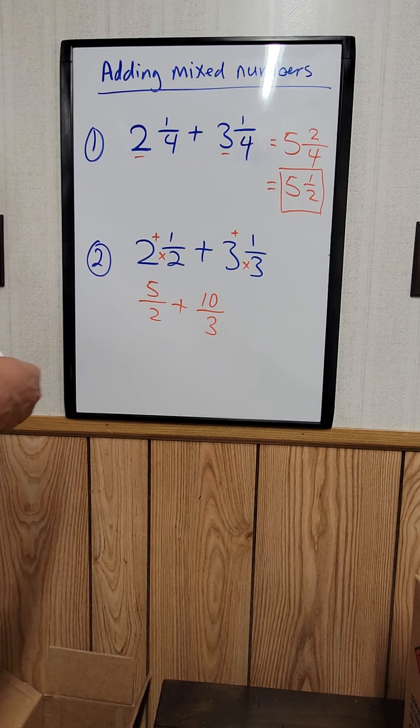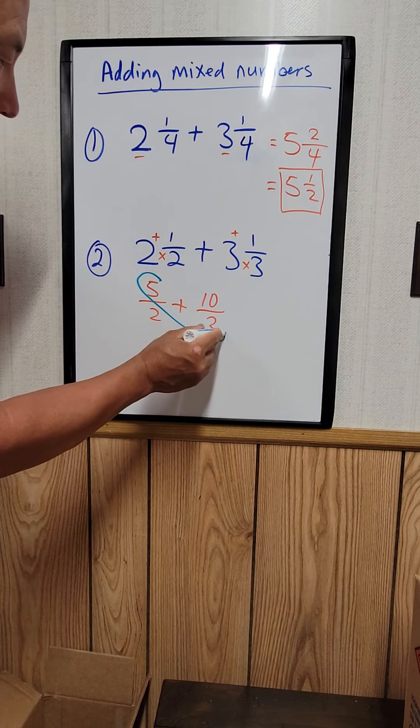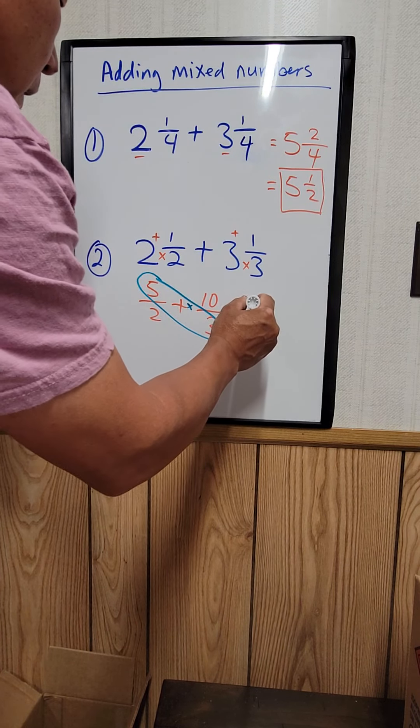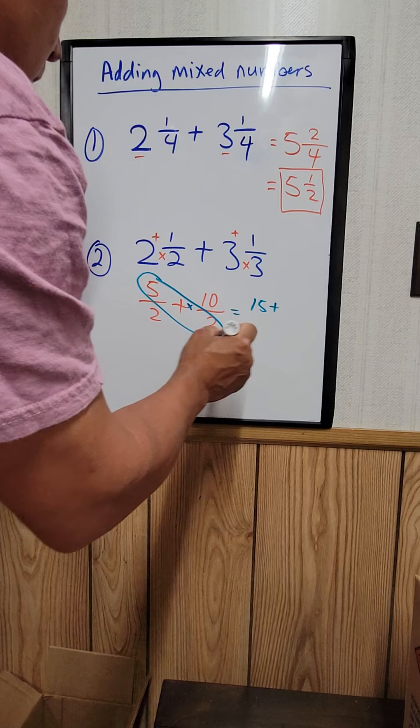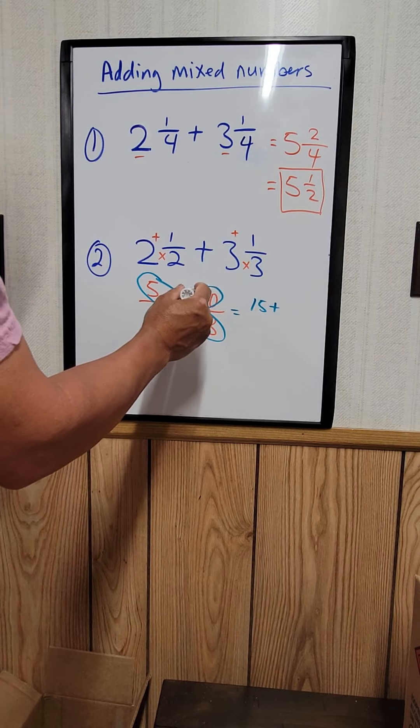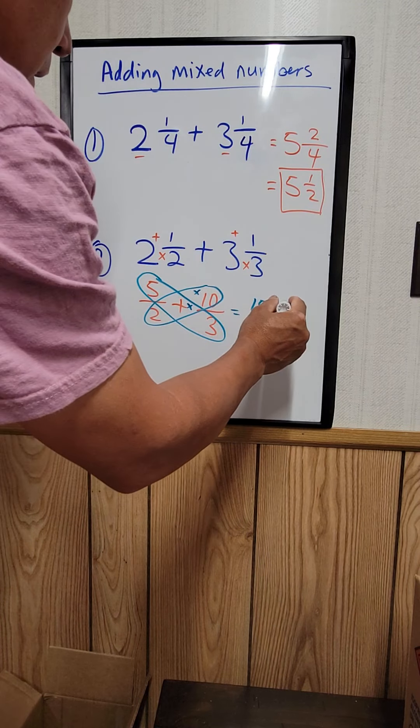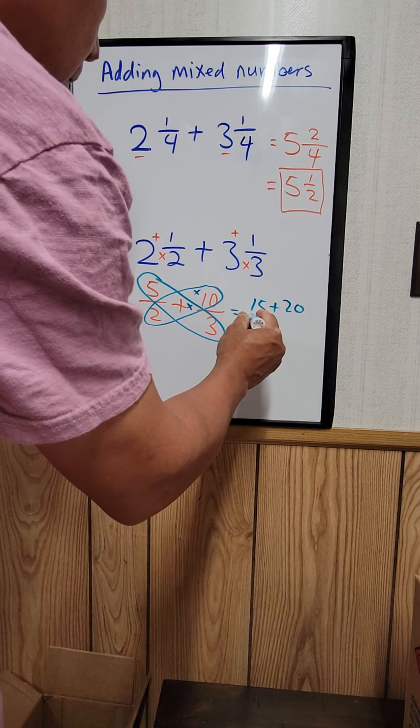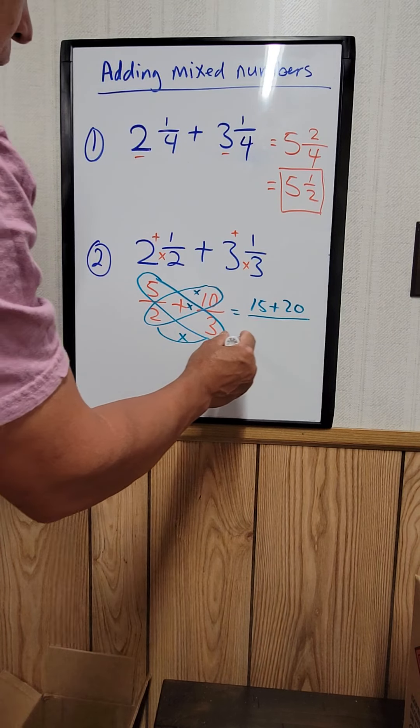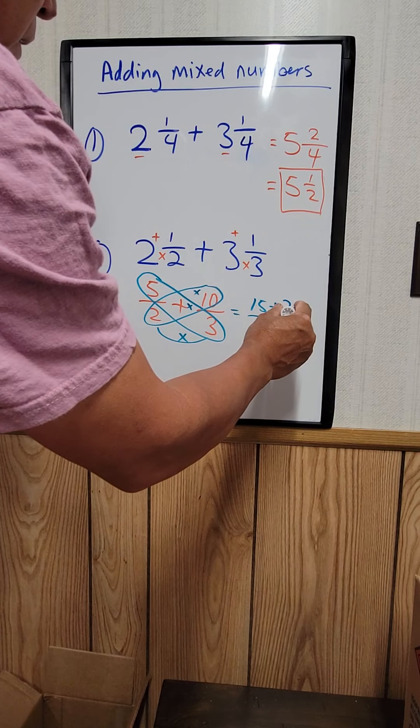Now we can use the butterfly method. The butterfly method: you take 5 times 3 which equals 15, plus 2 times 10 is 20, over 2 times 3 is 6.